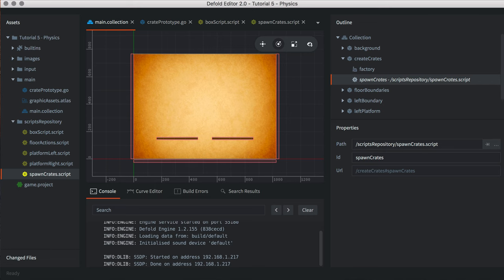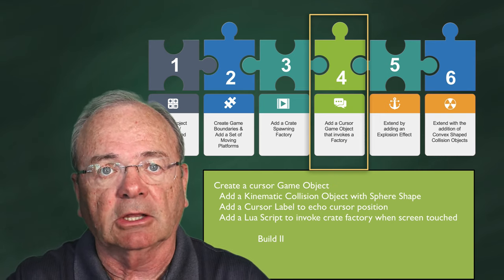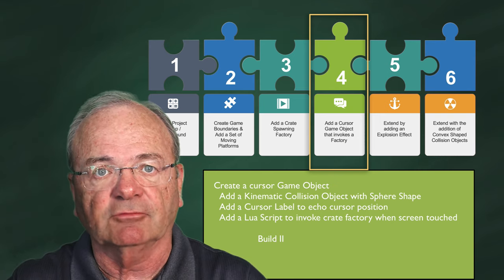Go ahead and save your project. It's now time for build one. Let's ensure we have no errors and observe the movement of our left and right platforms. Build one isn't very exciting — you'll simply see the platforms moving back and forth — but it gives us a chance to benchmark and make sure we have no errors. Let's build on that foundation.